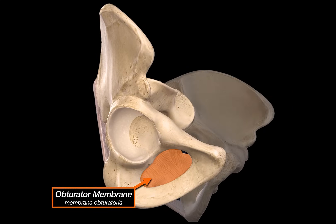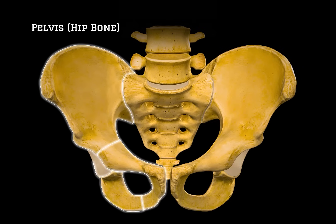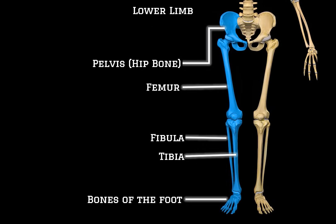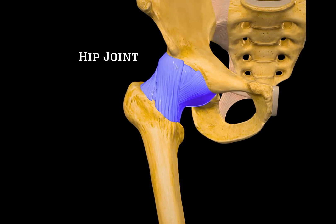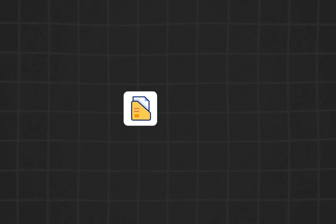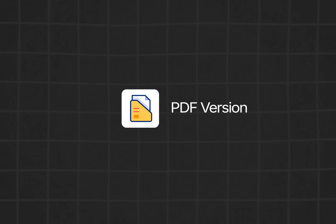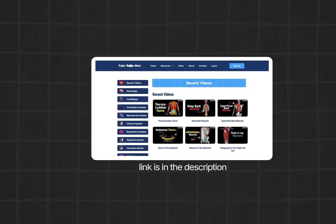Lastly, let's not forget the obturator membrane, which spans the obturator foramen, leaving just a small canal called the obturator canal, through which the obturator nerve and vessels pass. So that wraps up everything about the pelvis and hip bone. The next video is going to be about the hip joint, so if you want to learn more about how the femur interacts with the acetabulum and what ligaments and movements are involved, go ahead and click the next video. If you want a PDF version of this lecture, a quiz to test your knowledge, or access to an organized list of all my videos, you can find everything on my website. Thanks for watching, see you in the next one.